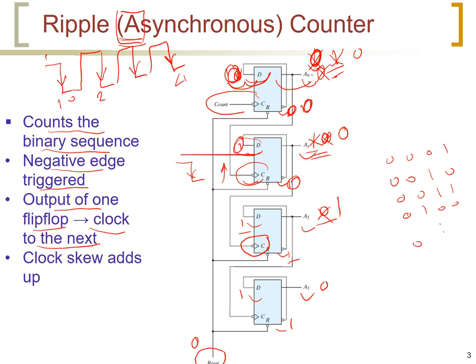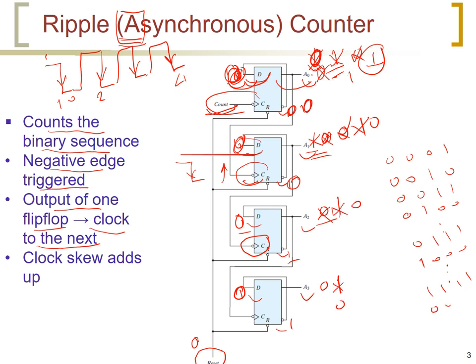We continue counting until we reach 0, 1, 1, 1, which is 7. Using the same method, we can prove the next count is 8, and so on up to 15. When all bits are 1, the D inputs become all 0s. On the next count, each flip-flop changes from 1 to 0 in sequence, causing all subsequent flip-flops to toggle to 0 as well, and we return to 0, 0, 0, 0, and so forth.